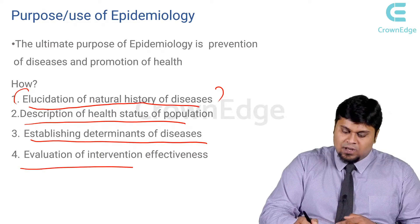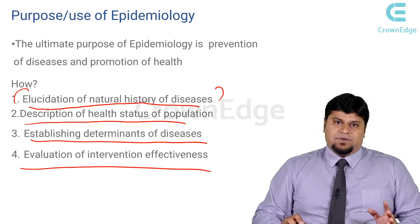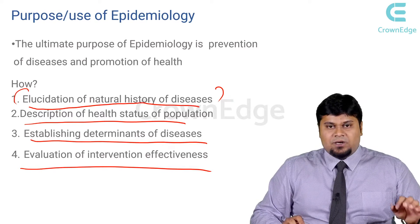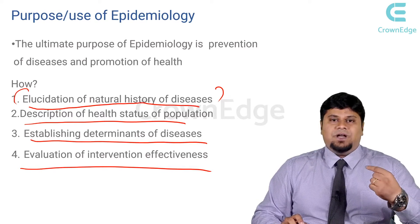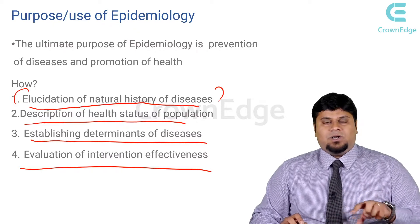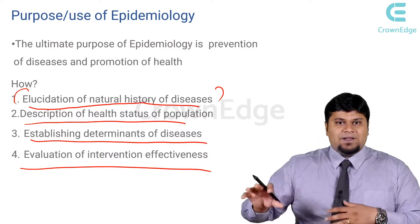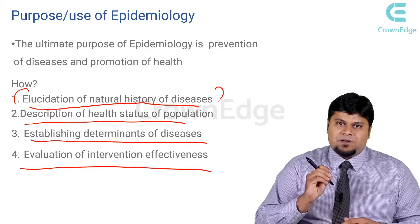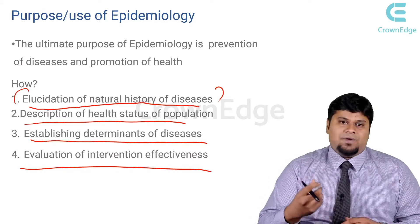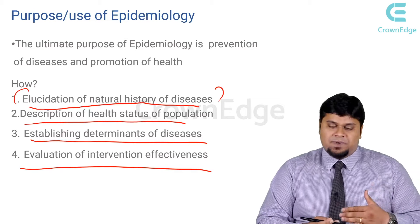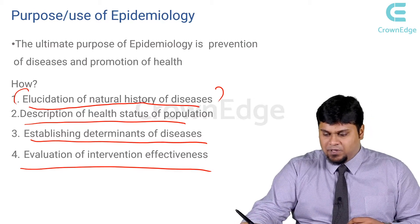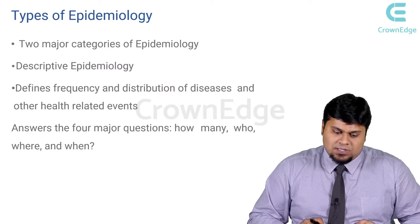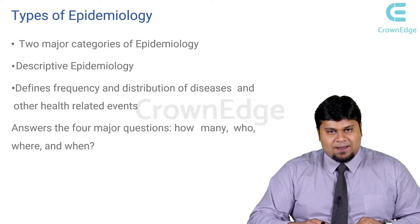Eventually, you are evaluating the intervention's effectiveness. When you study the epidemiology of a disease, you study the true evaluation of whether whatever intervention you have provided has worked or not. The end result evaluation is done only when you apply epidemiological principles to the study of all your evaluation programs. So these are the purposes and uses of epidemiology.